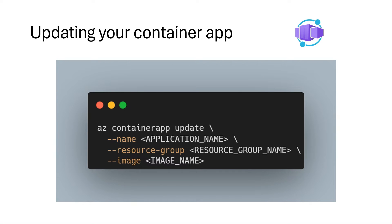With the az container app update command, you can modify environment variables, compute resources, scale parameters, and deploy different images. If your container app update includes a revision scope change, a new revision will be generated. You can also use the Azure CLI to list all revisions associated with your container app.